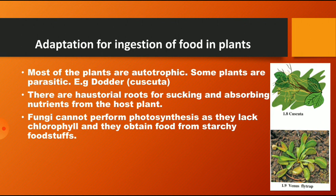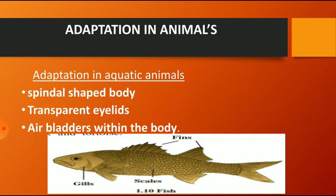Now let us learn the next point, that is the adaptation in animals. In aquatic animals, their body becomes spindle-shaped, and they have transparent eyelids and an air bladder within the body. These are the adaptations in aquatic animals for respiration — gills and the air bladder for floating.